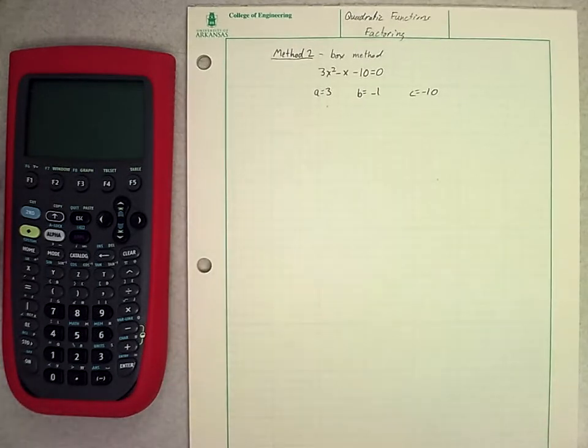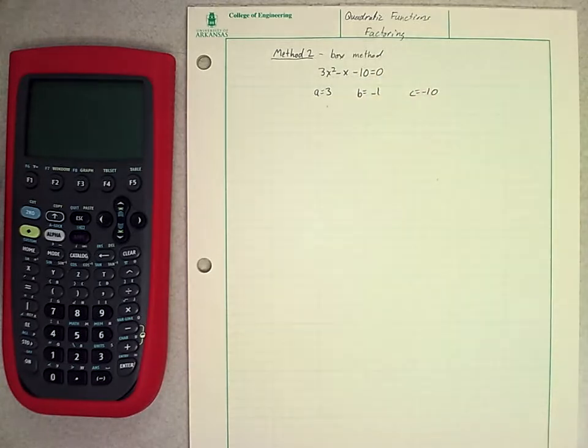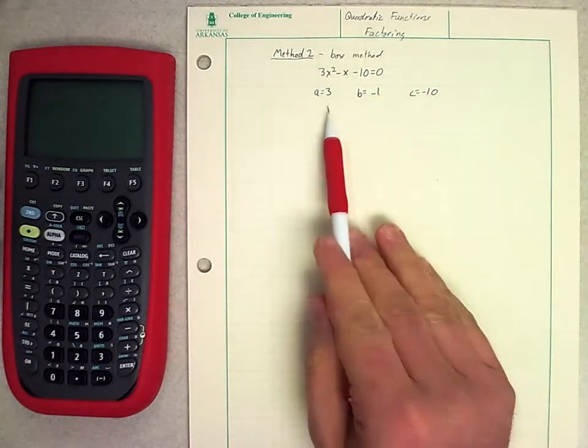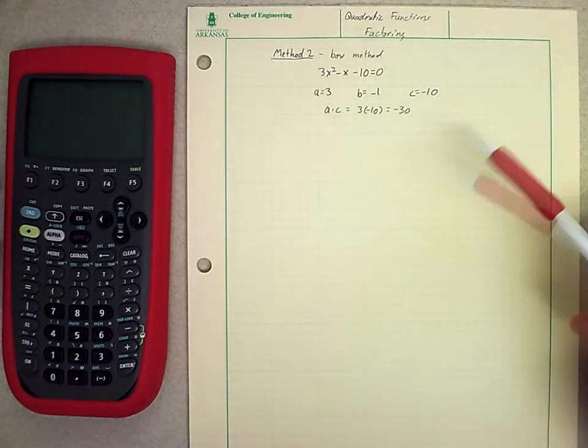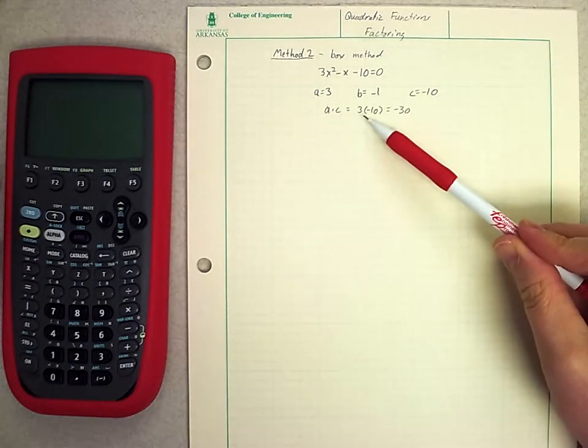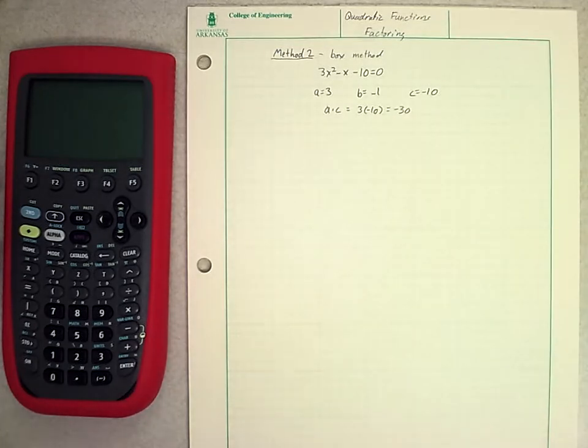Okay, so for the box method, let's start with the same set of principles. We've got the same equation, 3x² - x - 10 = 0. We're just going to hope this works a little bit quicker. So we know that a = 3, b = -1, c = -10. The key to starting this out is to think about what is a times c. And for this particular example, that is 3 times -10, which is -30.